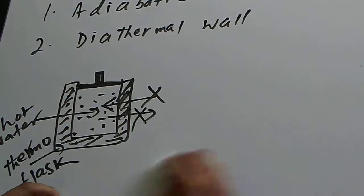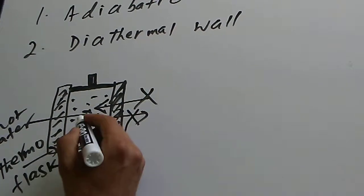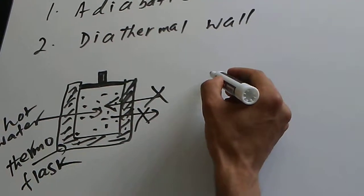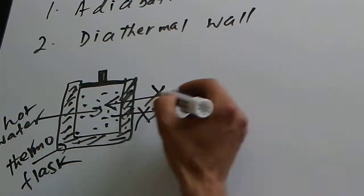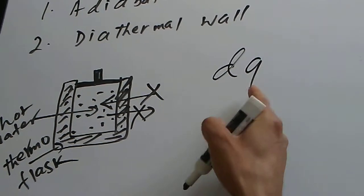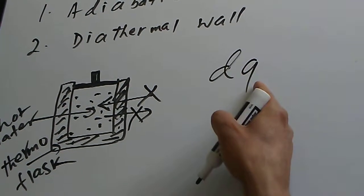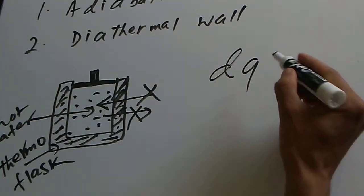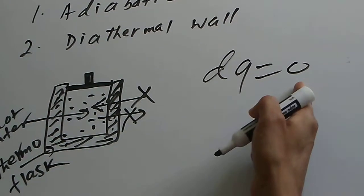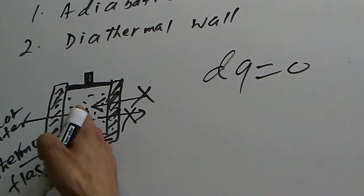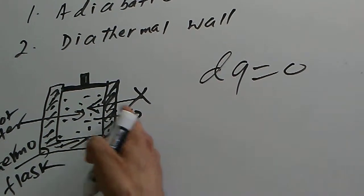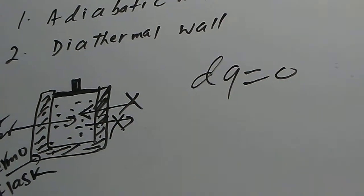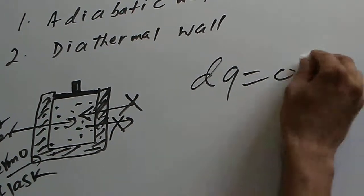An adiabatic wall doesn't allow heat to go out, nor does it allow heat to come into the system. If you want to represent the heat energy transfer — dQ, a small amount of heat energy going into or out of the system through the adiabatic wall — it is zero, because heat is not going in or out. So dQ always equals zero.